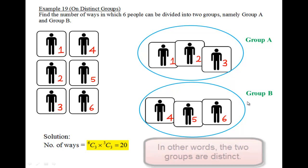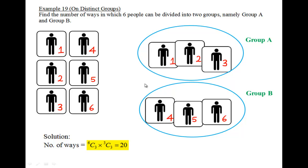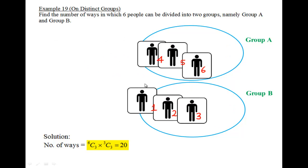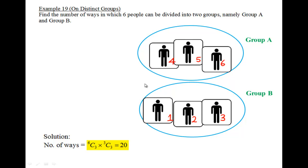So now 1, 2, 3 is in Group A. 4, 5, 6 is in Group B. So if I were to pick 4, 5, 6 forming in Group A and 1, 2, 3 being in Group B, essentially there is no double counting.